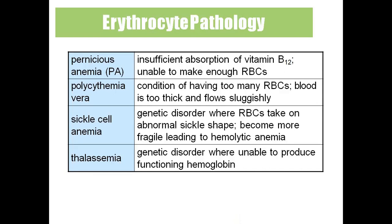Polycythemia means having too many RBC. Sickle cell anemia is a genetic disorder in which RBC are sickle-shaped instead of biconcave; they die before 120 days, leading to anemia. Thalassemia is also a genetic disorder where the body produces non-functioning hemoglobin — it produces hemoglobin but it does not function properly.